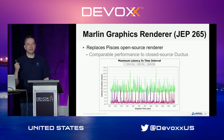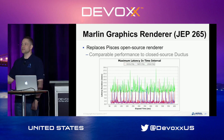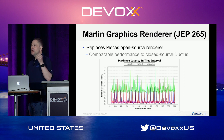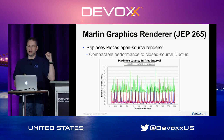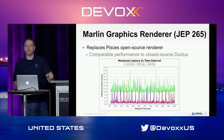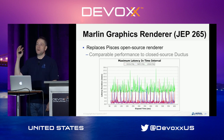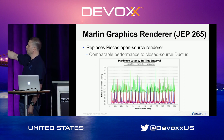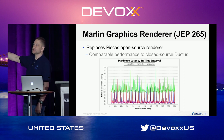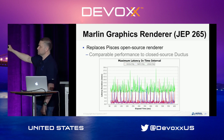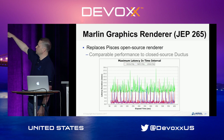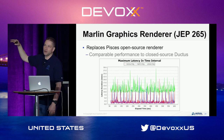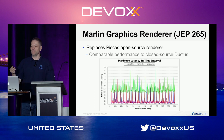The graphics renderer has changed. The OpenJDK previously used Pisces (open source), while Oracle's binary distribution replaced it with the closed-source Ductus for better performance. To address this, there is now the Marlin graphics renderer, which is open source but gives performance comparable to Ductus. A graph shows Pisces with greater latency, while Ductus and Marlin are nearly identical in performance.